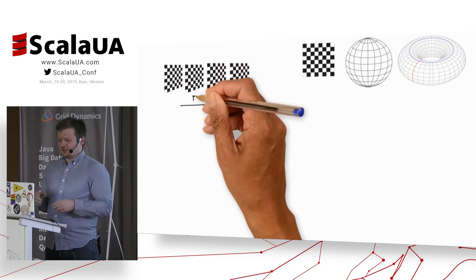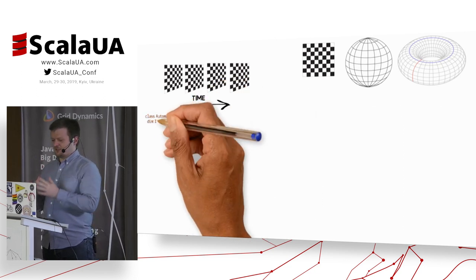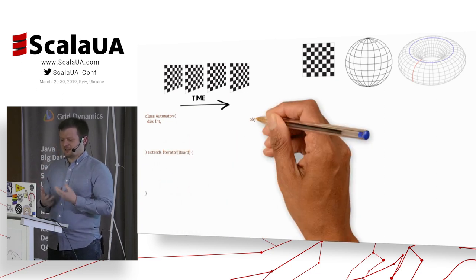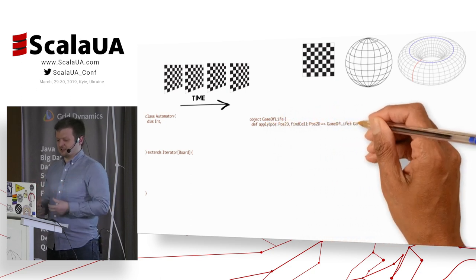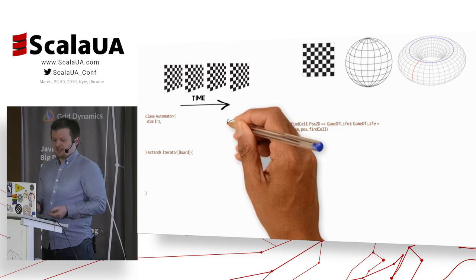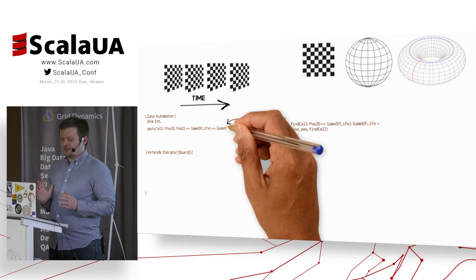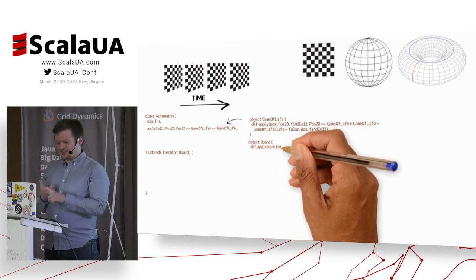As you can see, every time we update the whole board, we create the exact copy of that board with some state changed. So that's actually an iterator. In Scala, we can simply extend an iterator of the board, call it automaton. And the automaton will have some dimension, which is the side of the board, and it needs some methods.